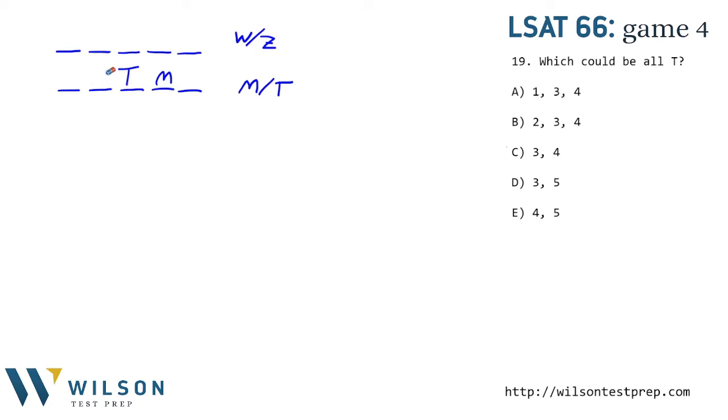So since we have to have exactly two consecutive, there's two ways this can happen. We can have two and three be traditional, or we can have three and four be traditional. Let's write out these possibilities.